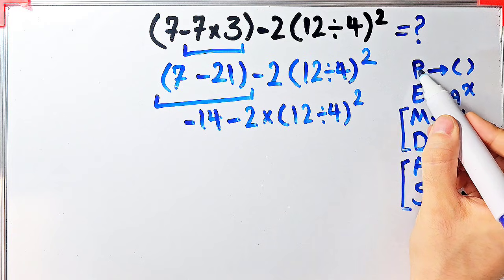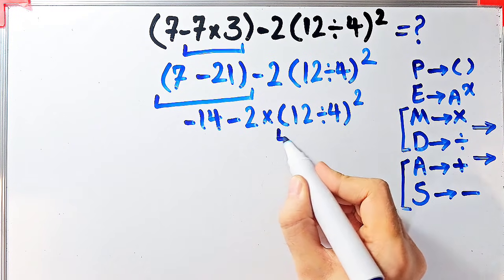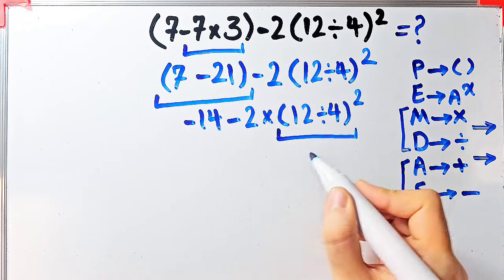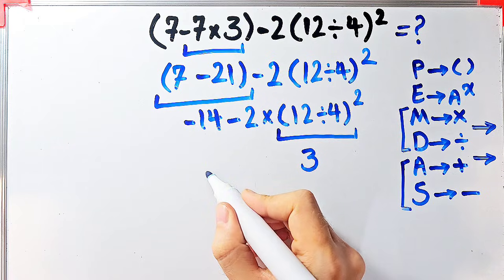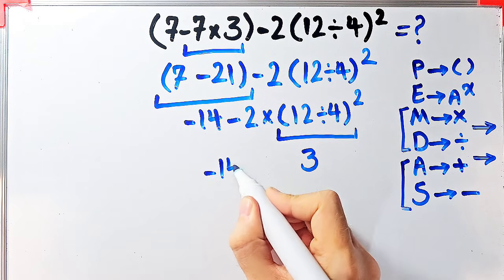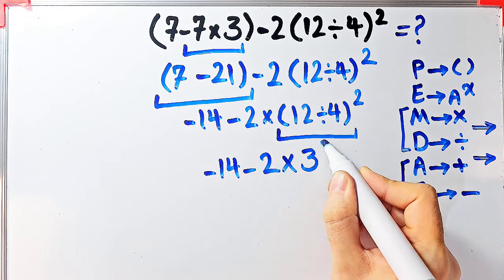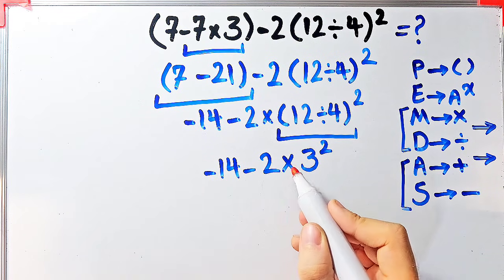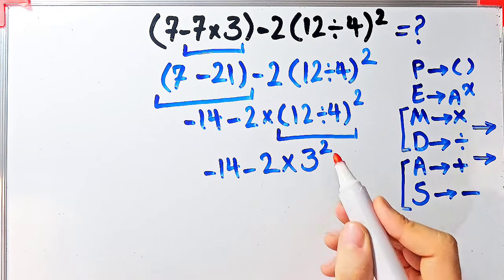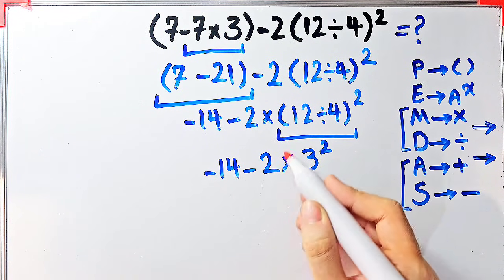Again we simplify the parentheses. Inside these parentheses we have twelve divided by four. Twelve divided by four equals three. Now we have: negative fourteen minus two times three to the power of two. We have subtraction, multiplication, and exponent. First we simplify this exponent.